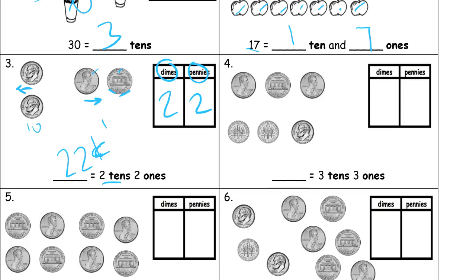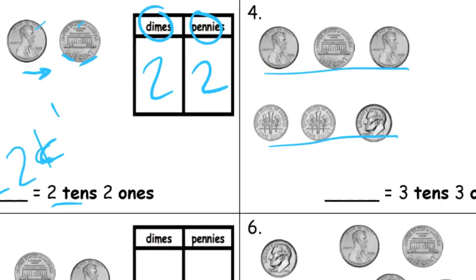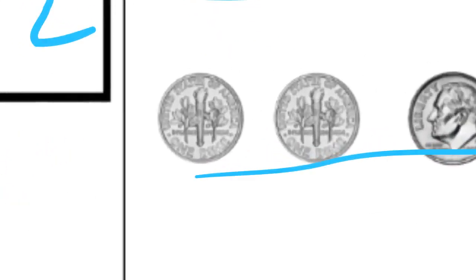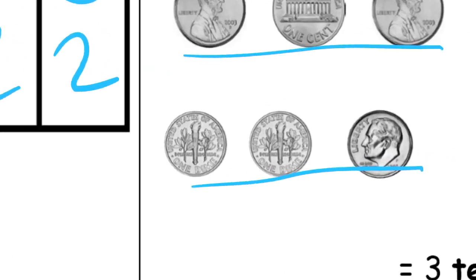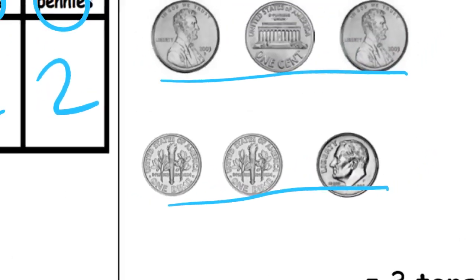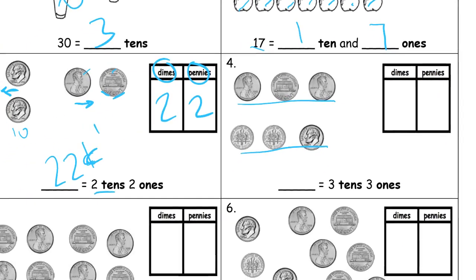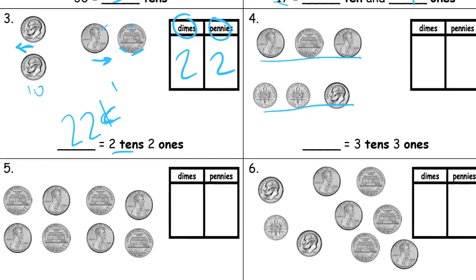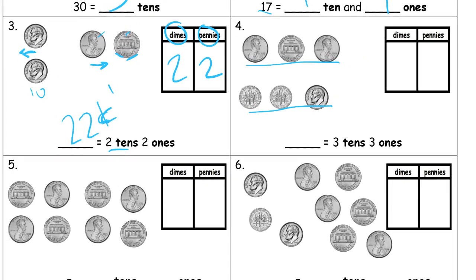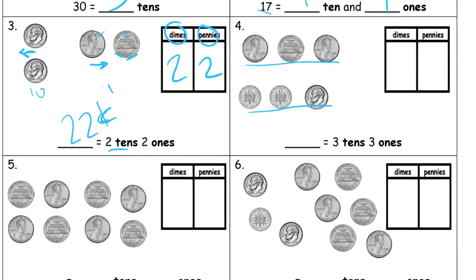Now here we have a row of pennies and this is a row of dimes. And you can tell when you see the backs of them with dimes, you've got the torches. You've got the torch and the flowers. And with the pennies on the back, you have the Lincoln Memorial. So that's three pennies, three dimes, three tens, three ones. It's 33 cents.